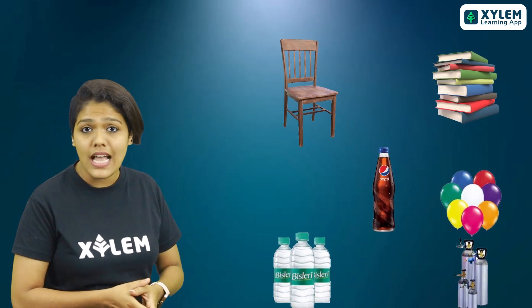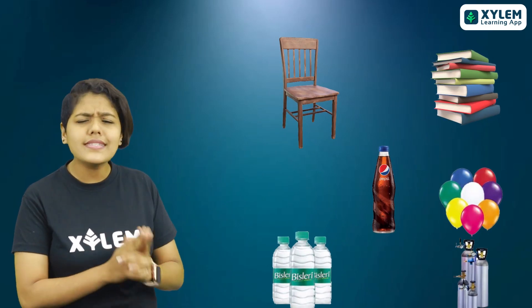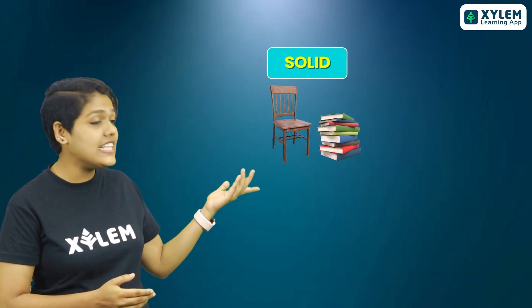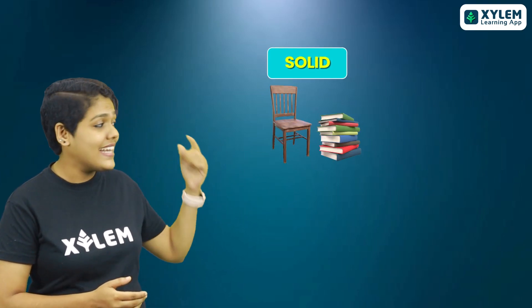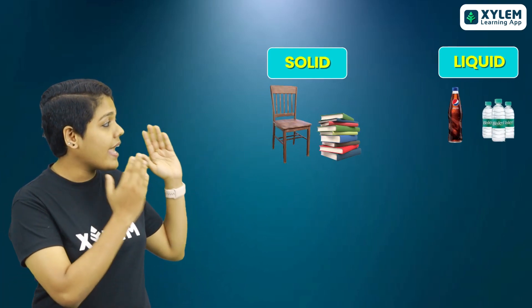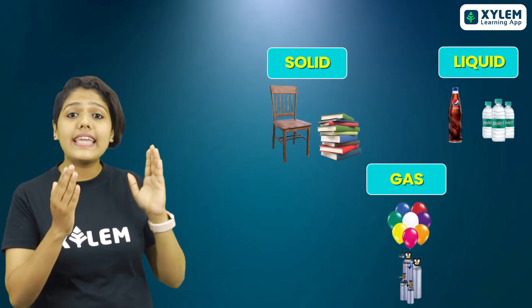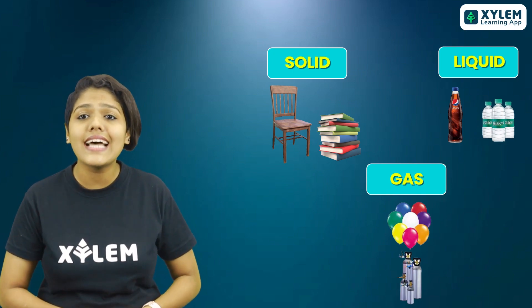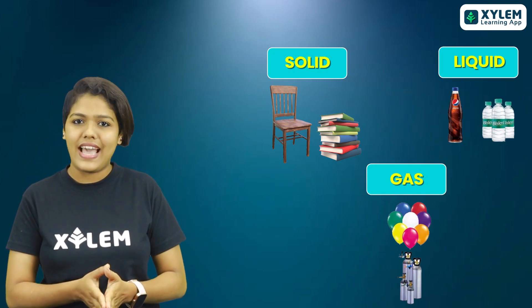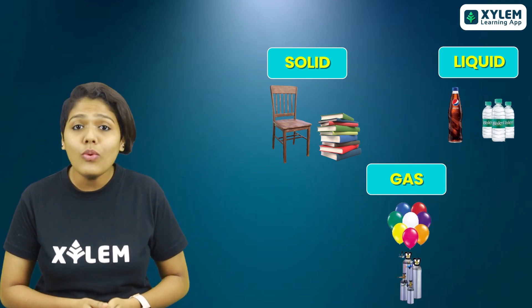Here you can see some of the examples. Just identify which are solids, liquids and gases. These are solids, these are liquids, and the air and the gas that is inside the balloon are examples of gases.